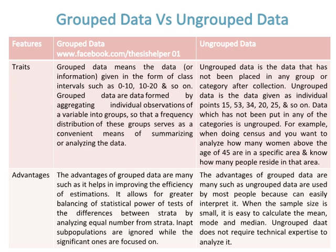The traits of ungrouped data: ungrouped data is data that has not been placed in any group or category after collection. It is given as individual points, such as 15, 53, 34, 20, 25, and so on. Data which has not been put into any category is considered ungrouped.